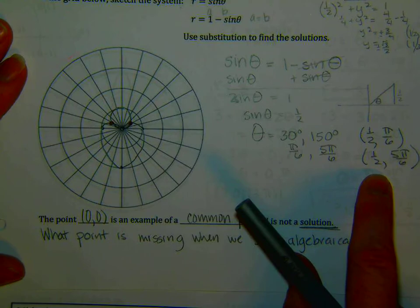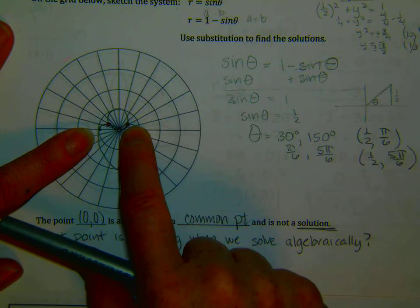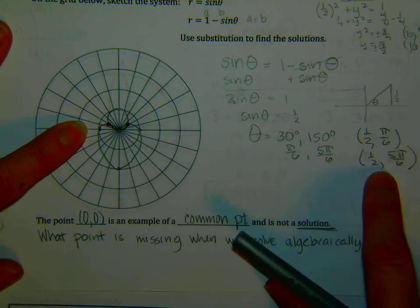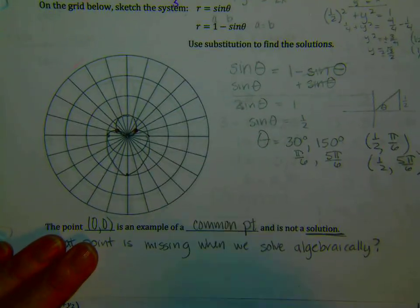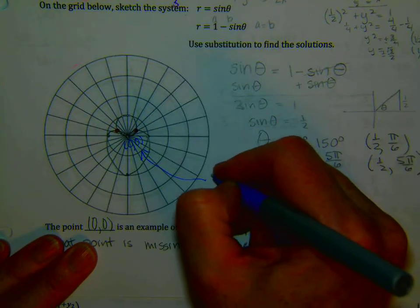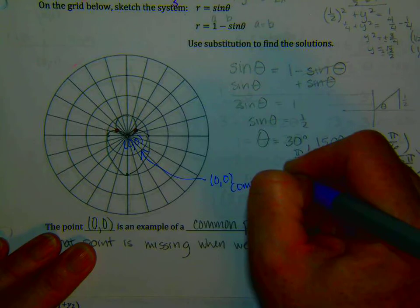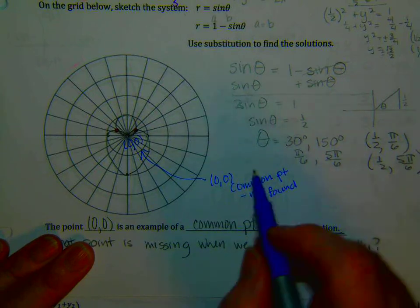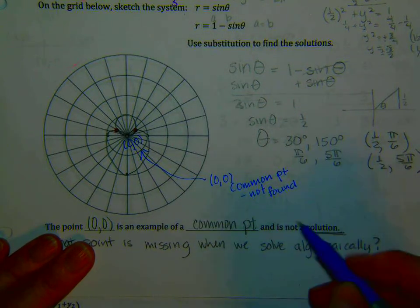We found these points where we found the graph at pi over 6, 1 half, and 5 pi over 6, 1 half - we found those points algebraically. We see that the graphs intersect at (0, 0), but we did not find the point (0, 0) algebraically. Therefore, the point (0, 0) is a common point, because it is not found algebraically.